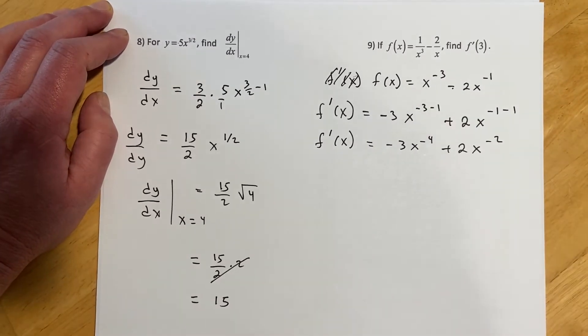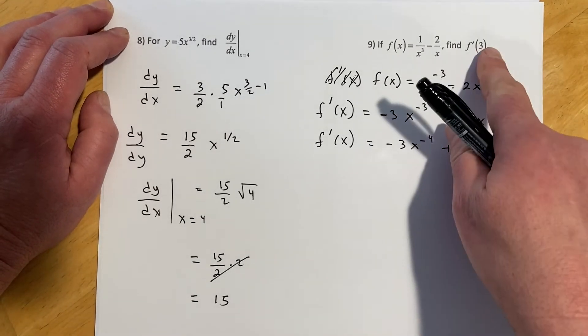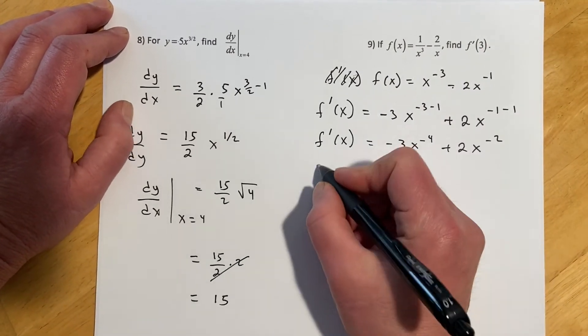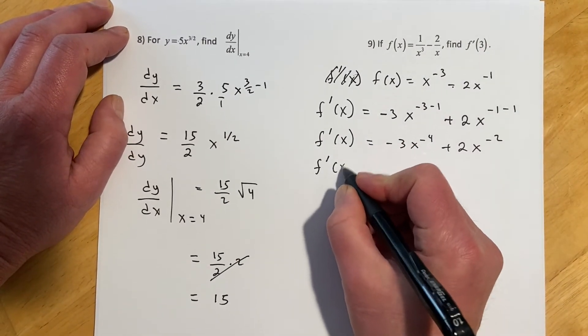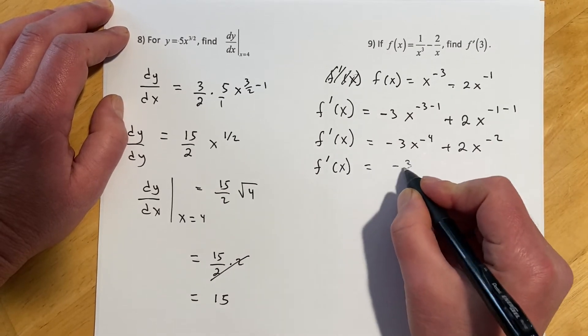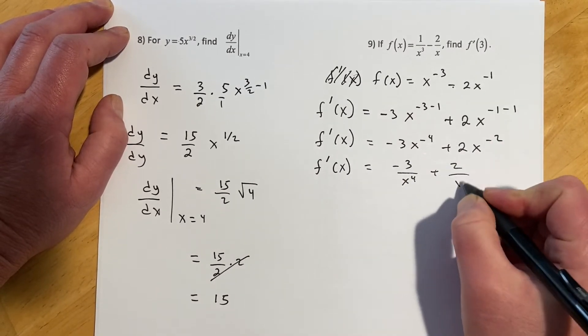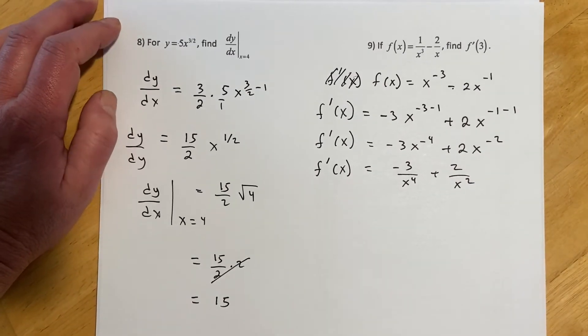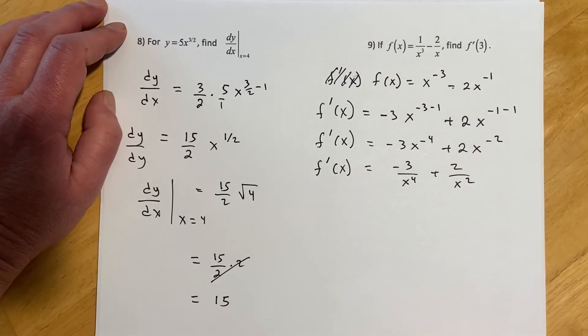And then I'm supposed to evaluate that at 3. And so since I'm going to actually try to do math with this, I think I will rewrite those this way. So I'm going to rewrite those with positive exponents, since I'm about to plug in the 3, and that'll make it a little bit easier.